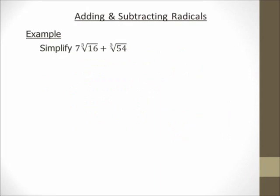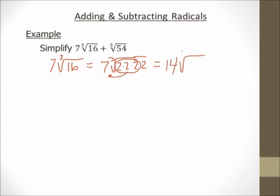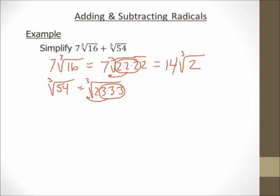Hi there, it's me, Mr. B. We're going to simplify 7 cube root of 16 plus cube root of 54. The first thing we need to do is simplify each radical. 7 cube root of 16 is 7 cube root of 2 times 2 times 2 times 2. My index is a 3, so I circle 3 of the same thing — the 2s — and bring one out, ending up with 14 cube root of 2. For cube root of 54, that's the cube root of 2 times 3 times 3 times 3. My index is a 3, so I circle a group of three 3s and bring one out: 3 cube root of 2.